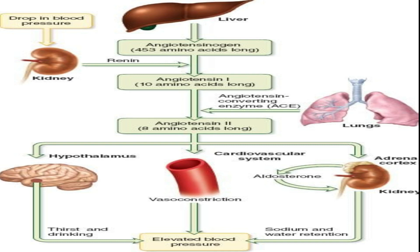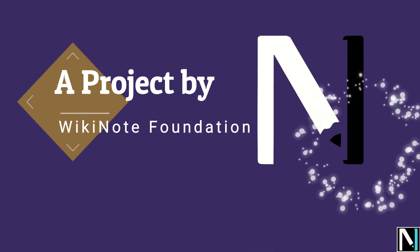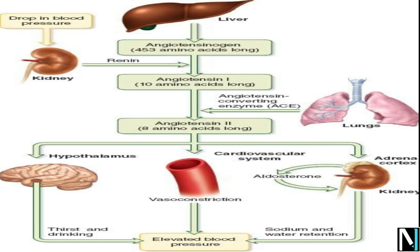In today's lecture we'll discuss the regulation of kidney function. The kidney function is regulated by three major hormonal systems: antidiuretic hormone (ADH), the renin-angiotensin-aldosterone system (RAAS), and atrial natriuretic factor (ANF), a hormone released from the wall of the heart. Today we'll discuss in detail how RAAS regulates kidney function when there is a fall in glomerular blood flow or glomerular blood pressure, which activates the JG cells.